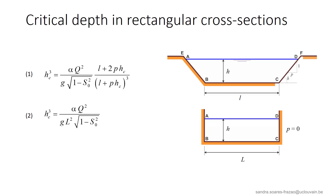For a rectangular cross-section, the expression to calculate the critical depth can be simplified. As the walls are vertical, P equals 0, and we see in equation 2 that the critical depth can now be calculated directly, without any iterations.